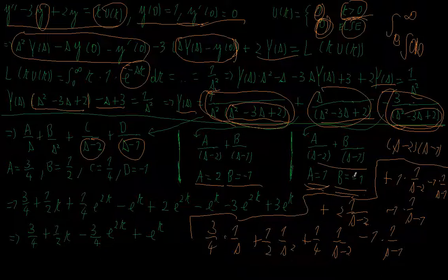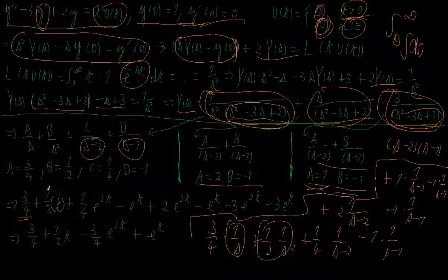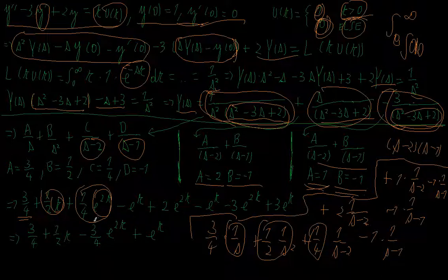Taking the inverse Laplace transform of everything: the inverse Laplace transform of 1/s is 1, so I get 3/4. The inverse Laplace transform of 1/s squared is t, so one-half of that is t/2. The inverse Laplace transform of 1/(s minus 2) is e to the 2t, so a quarter of that is (1/4)e to the 2t. The inverse Laplace transform of 1/(s minus 1) is e to the t, so minus 1 times that is minus e to the t.